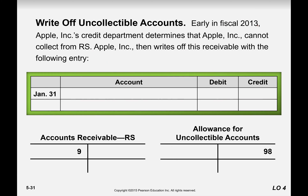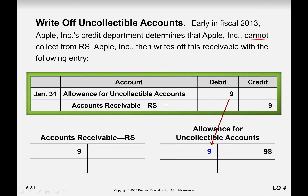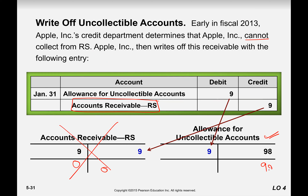Early in fiscal year 2013, Apple's credit department determines that RS cannot pay us, so a write-off is going to occur. The allowance is going to be decreased and this accounts receivable is going to be cancelled — brought to zero. So we are cancelling this RS and decreasing our allowance as well, so the balance is going to be 92.